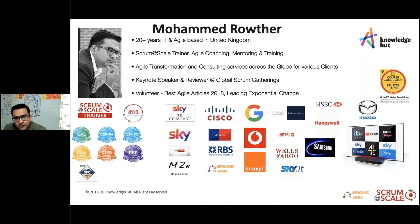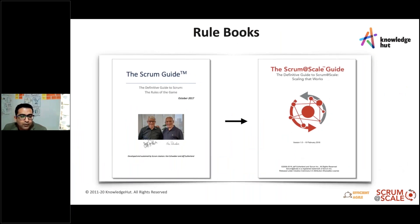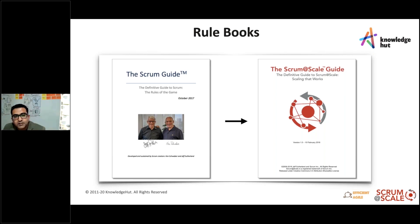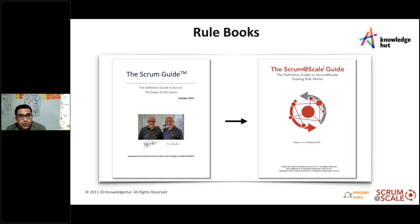We've got the rule books: the Scrum Guide and the Scrum at Scale Guide. Dr. Jeff Sutherland developed Scrum at Scale based on the fundamental principles behind Scrum — complex adaptive system theory, gaming theory, and work in biology. The entire idea of Scrum at Scale was to take the basis and foundation of Scrum and apply it across hundreds of teams. If you start introducing additional roles not part of the Scrum Guide, it's going to slow down your implementation and cripple your transformation.